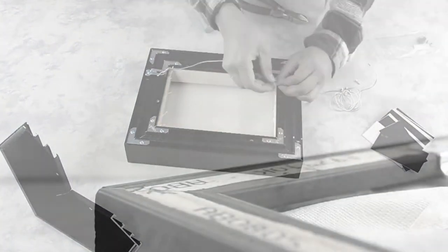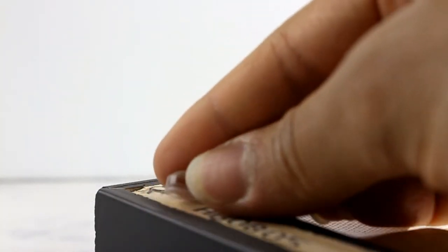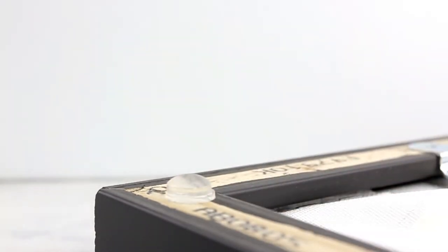Then cut the excess wire off. Place the bumpers on the bottom corner of the frame and the artwork is ready to hang.